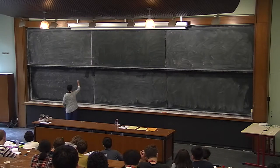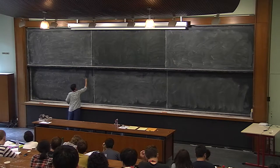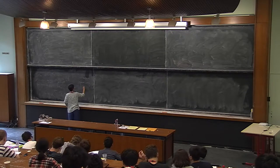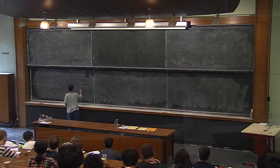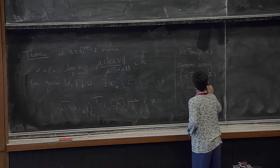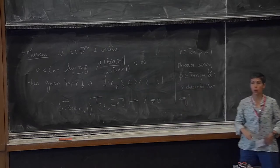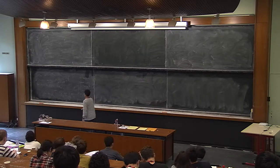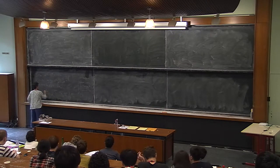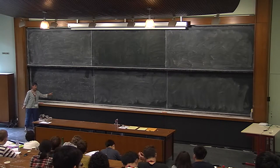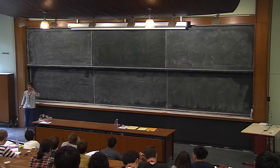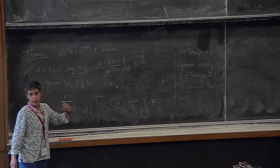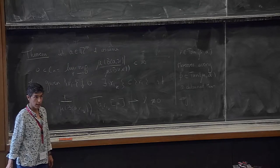Moreover, every tangent is obtained this way. What does it mean that every tangent is obtained this way? It means that if you take a bunch of c_sub_i's such that this converges to that tangent phi, the c_sub_i's are basically a constant of this one. The ratio of the two converges to a specific number. So these are all the tangent measures.